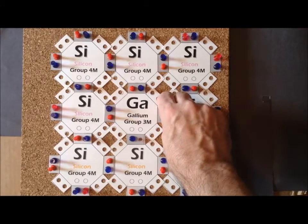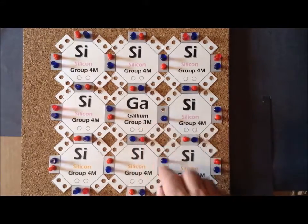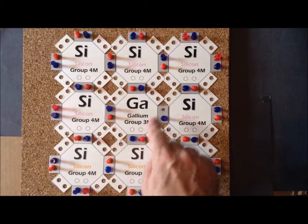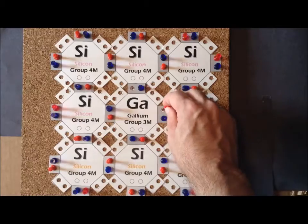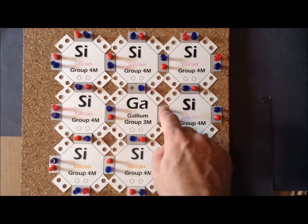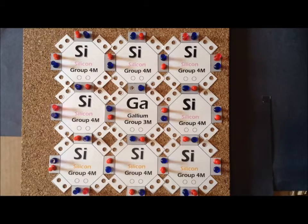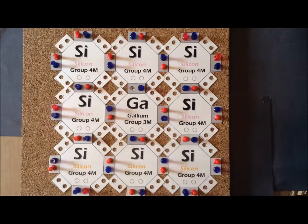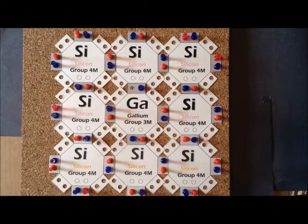So if, for example, this electron moves from this bond to here, that is equivalent to the hole moving from there to there. And equivalently, this electron can move, and now the hole has moved from here to there. So even without promotion, in this type of doped semiconductor—we dope it with gallium—we have a hole present, and the hole is free to move throughout the valence band.